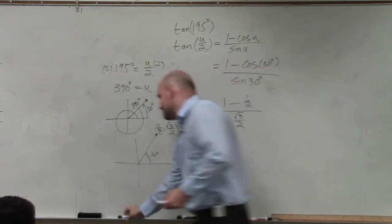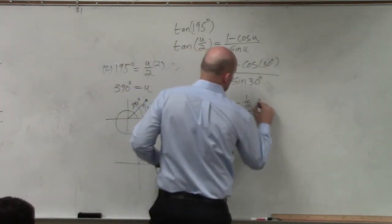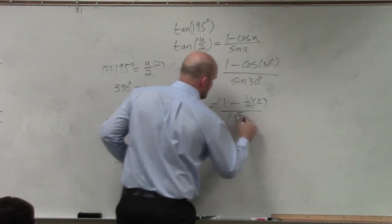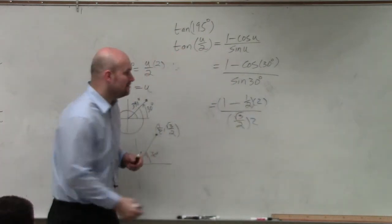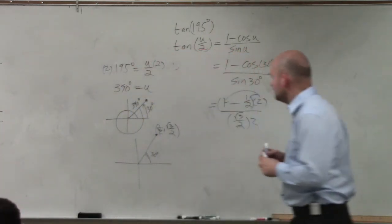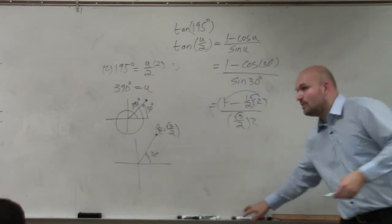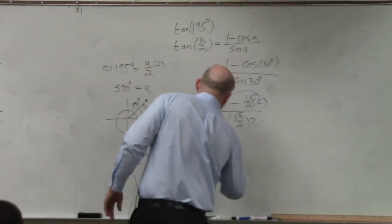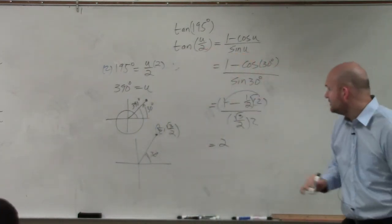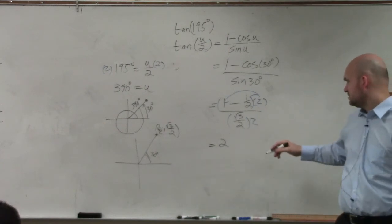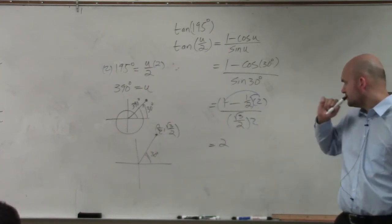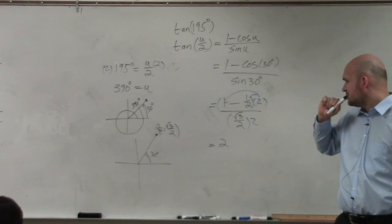And if I multiply by 2 on the top and the bottom, I now have 2 times 1, which is equal to 2. 2 times 1 half. I'm sorry. What happened in this?